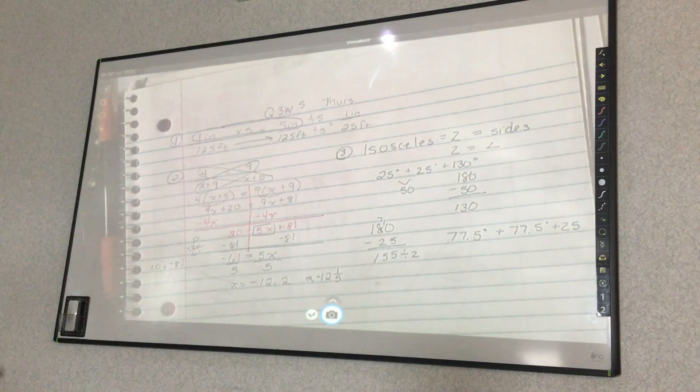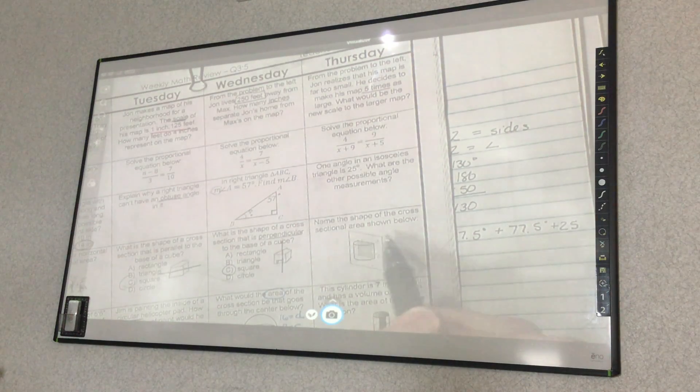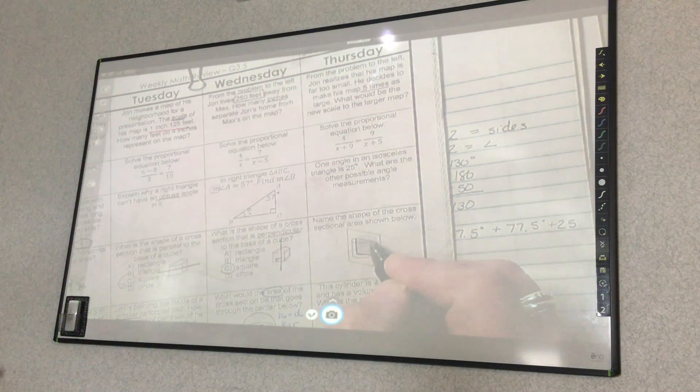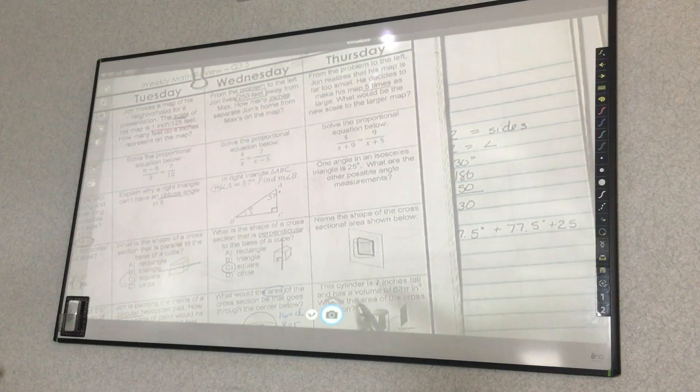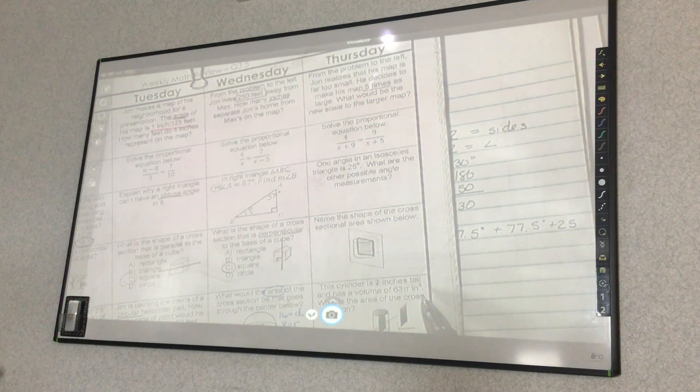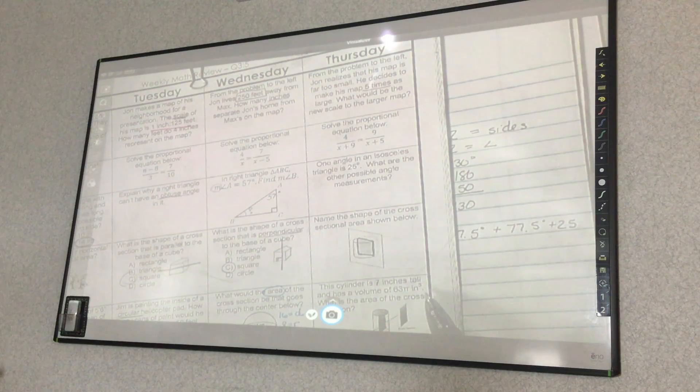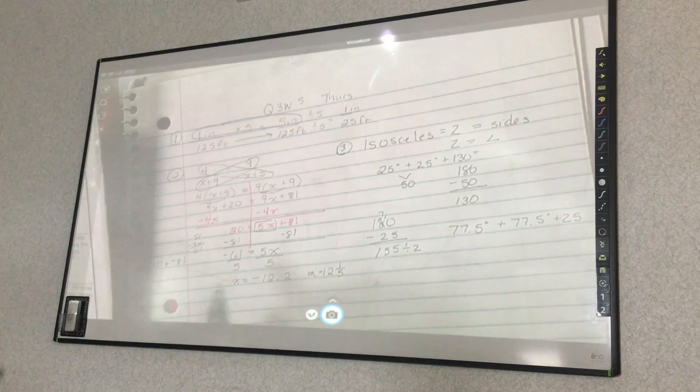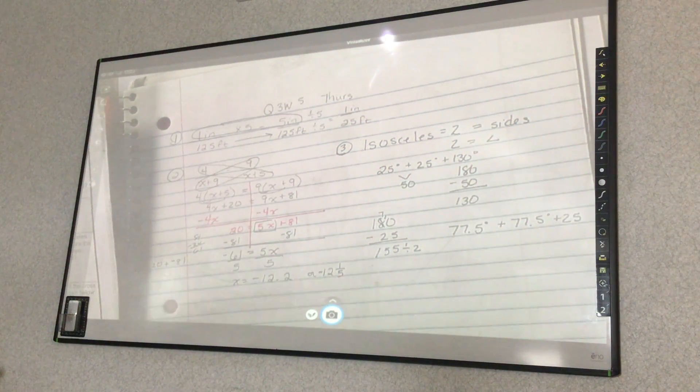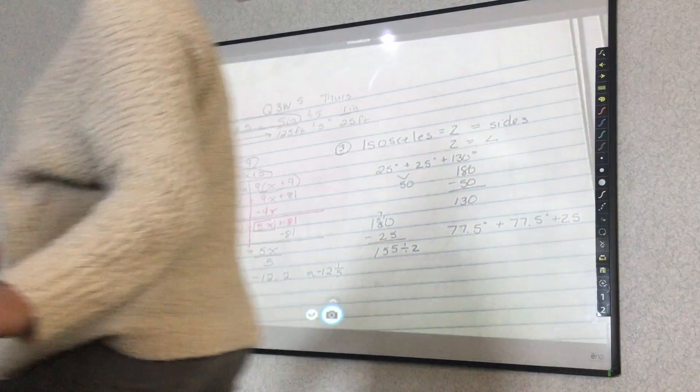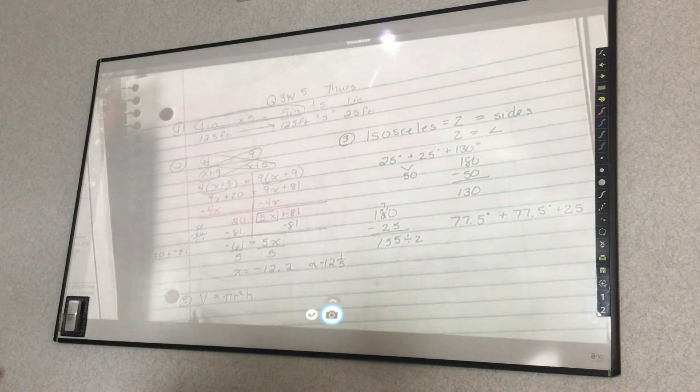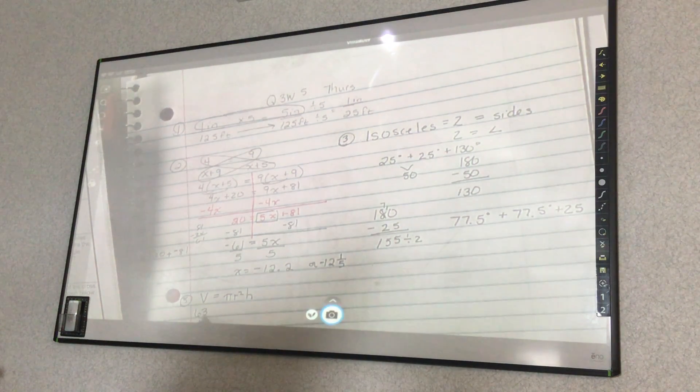Number four, name the shape of the cross-section and the area below. So it's what is shaded right in here. What is that shape? Square. Square. This cylinder is seven inches tall and has a volume of 63 pi inches cubed. What is the area of the cross-section? So first, I need to say volume equals pi r squared times the height. I know the volume is 63 pi.